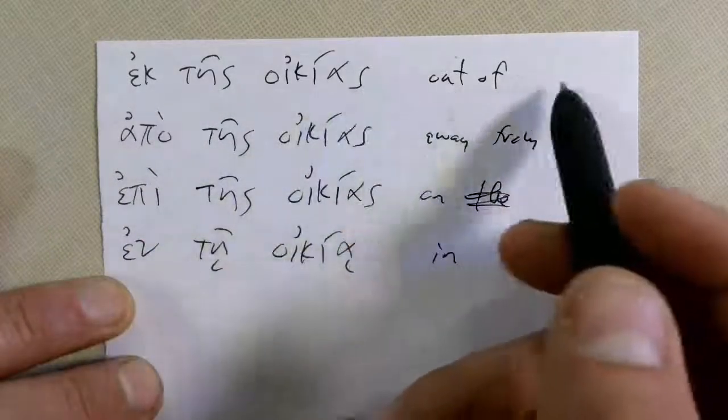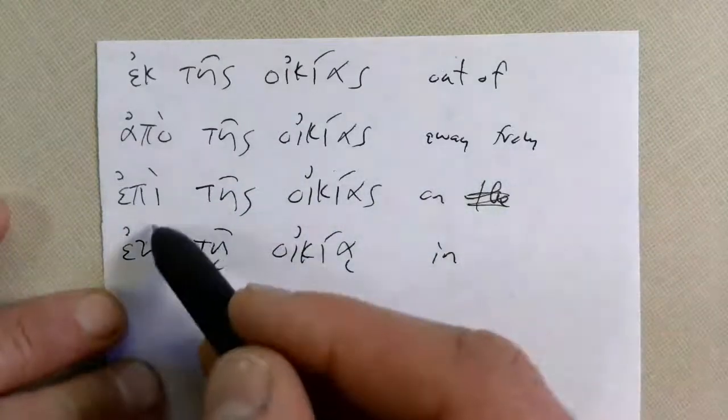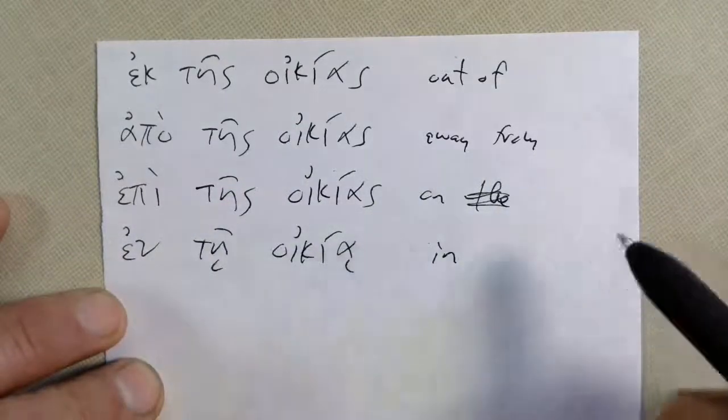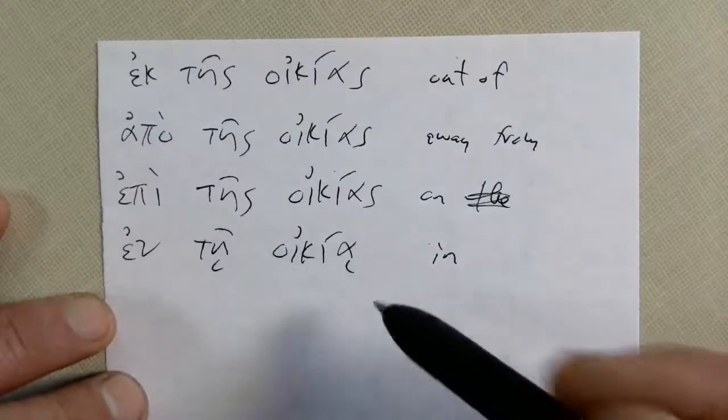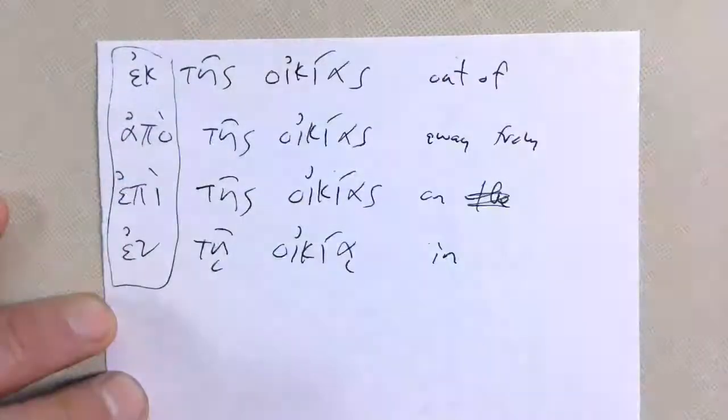Ectis iquias, out of the house. Apotis iquias, away from the house. Epitis iquias, on the house. And enti iquias, in the house. That's awesome you guys. Good, keep practicing that.